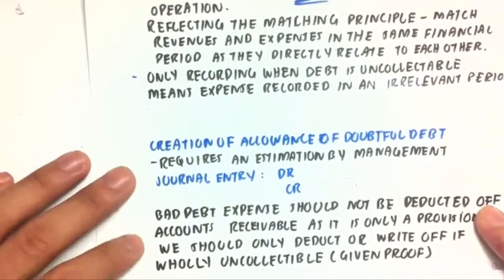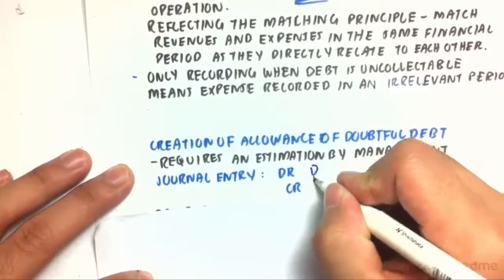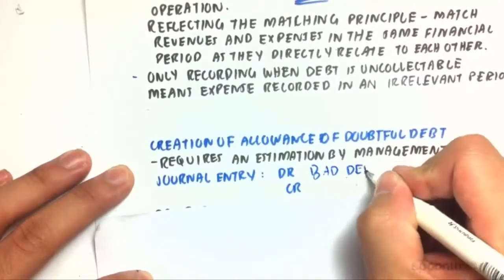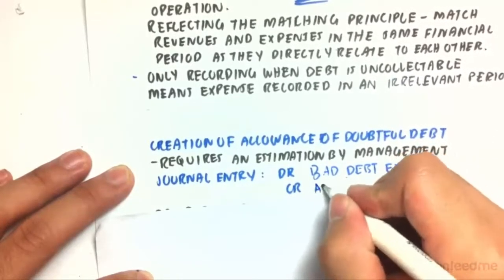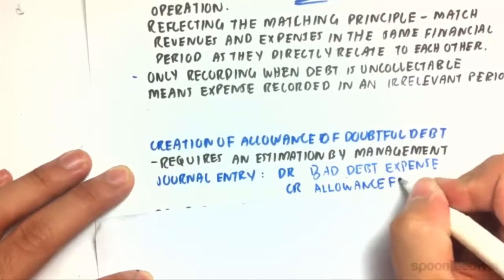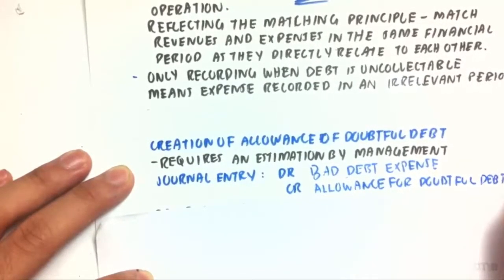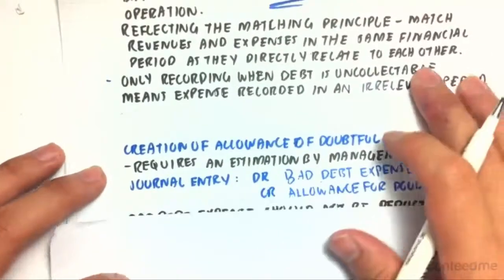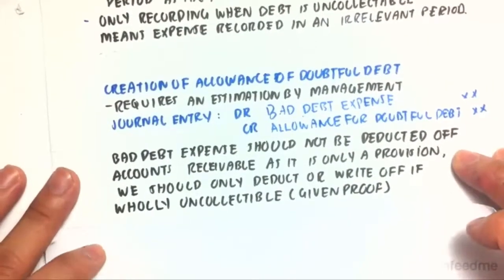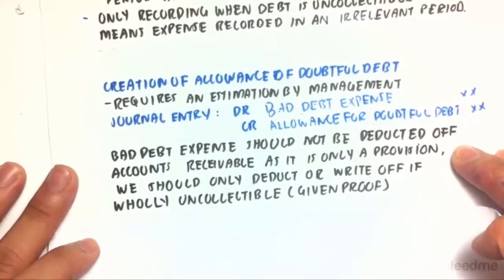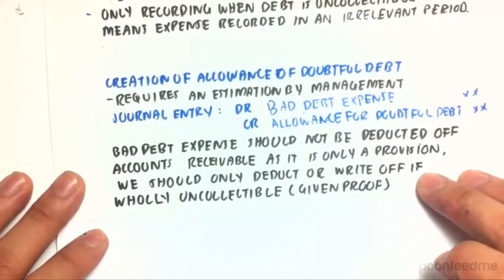So the creation of doubtful debt requires an estimation of bad debt by management. The journal entry for that would be: debit bad debt expense, credit allowance for doubtful debt, by X amount depending on the size of the estimation. Bad debt expenses should not be deducted off accounts receivable, as it's only a provision. We should only deduct a write-off if we know that it's going to be uncollectible, given proof that they won't be able to pay us back.